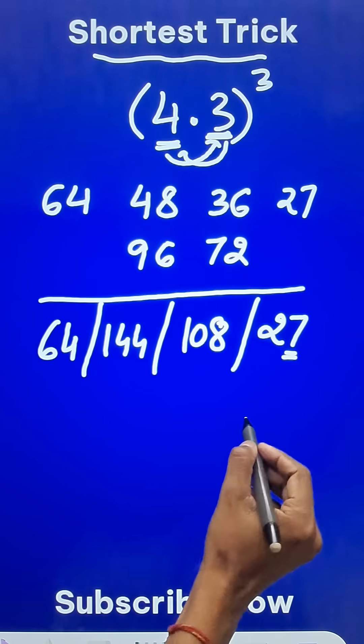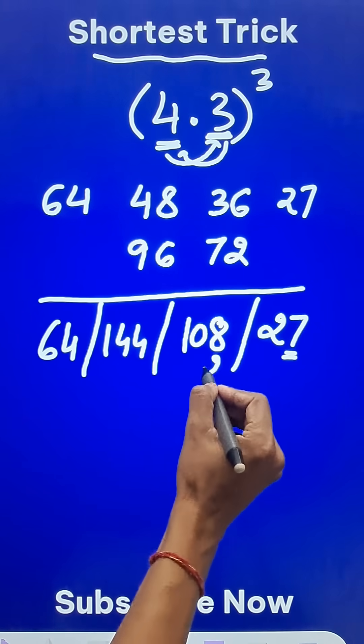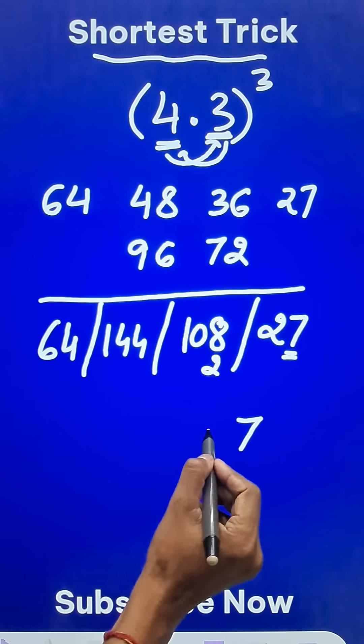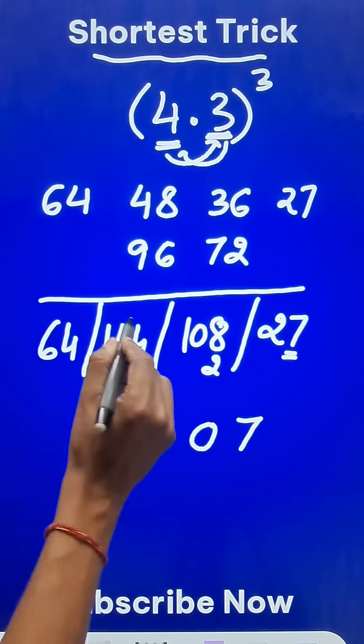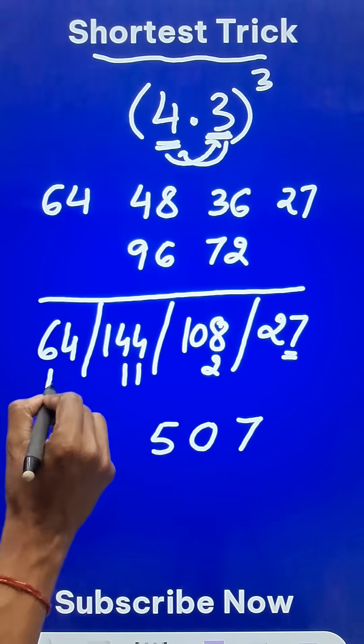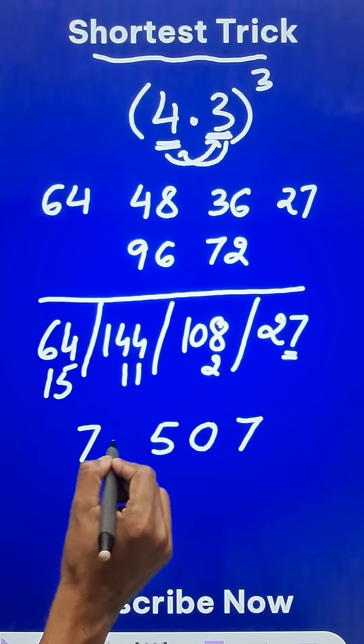Starting from the right hand side, the 7 stays, the 2 gets carried forward so this becomes 110, which means 0 and 11 gets carried forward. This becomes 155, which means 5, and 15 gets carried forward so this becomes 79.